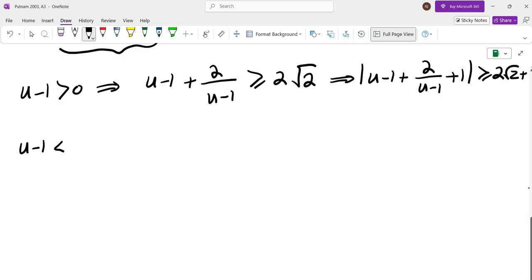If u minus one is negative, then u minus one plus two over u minus one is equal to, I can factor a negative sign, write it down as one minus u plus two over one minus u. And then we can use AM-GM. Now both one minus u, two over one minus u are positive. So we can say this is less than or equal to negative two root two by AM-GM.